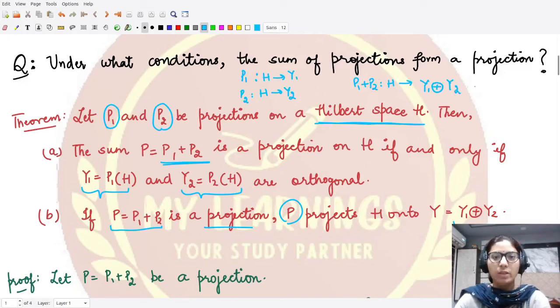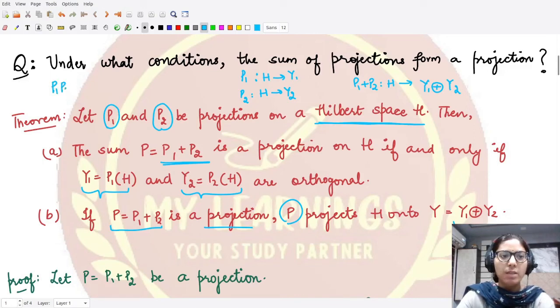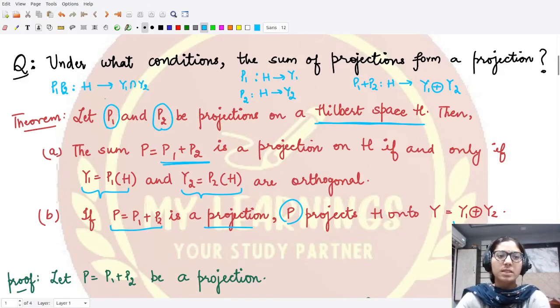In case of product, if you remember, P1 and P2 would project H onto the intersection of Y1 with Y2, and the condition was that P1P2 should be equal to P2P1.